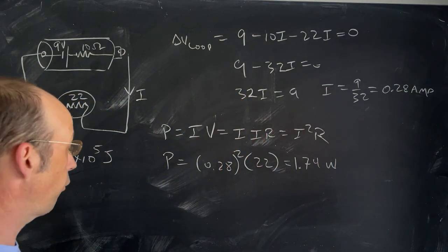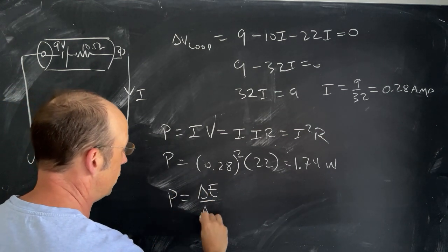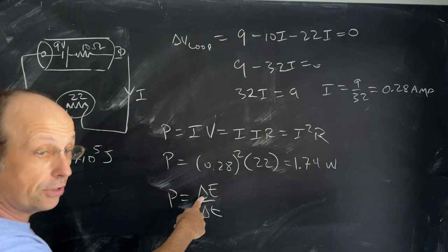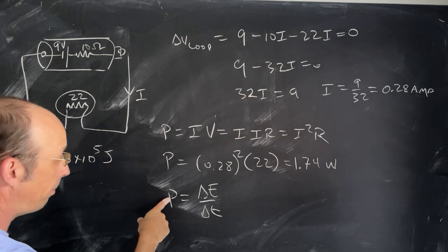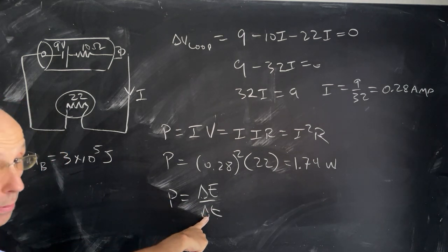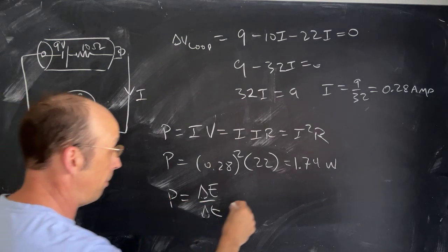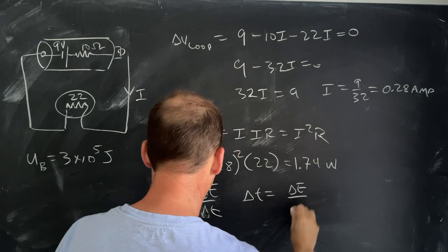How long will it last? Well, remember, power is the rate of change of energy. And so I know how much energy I have. I wrote this as U because it's like a potential energy, 3 times 10 to the 5th. I know power. I just want to solve for the time interval. So if I multiply both sides by the time interval, divide both sides by the power, I get delta t is delta E over P.